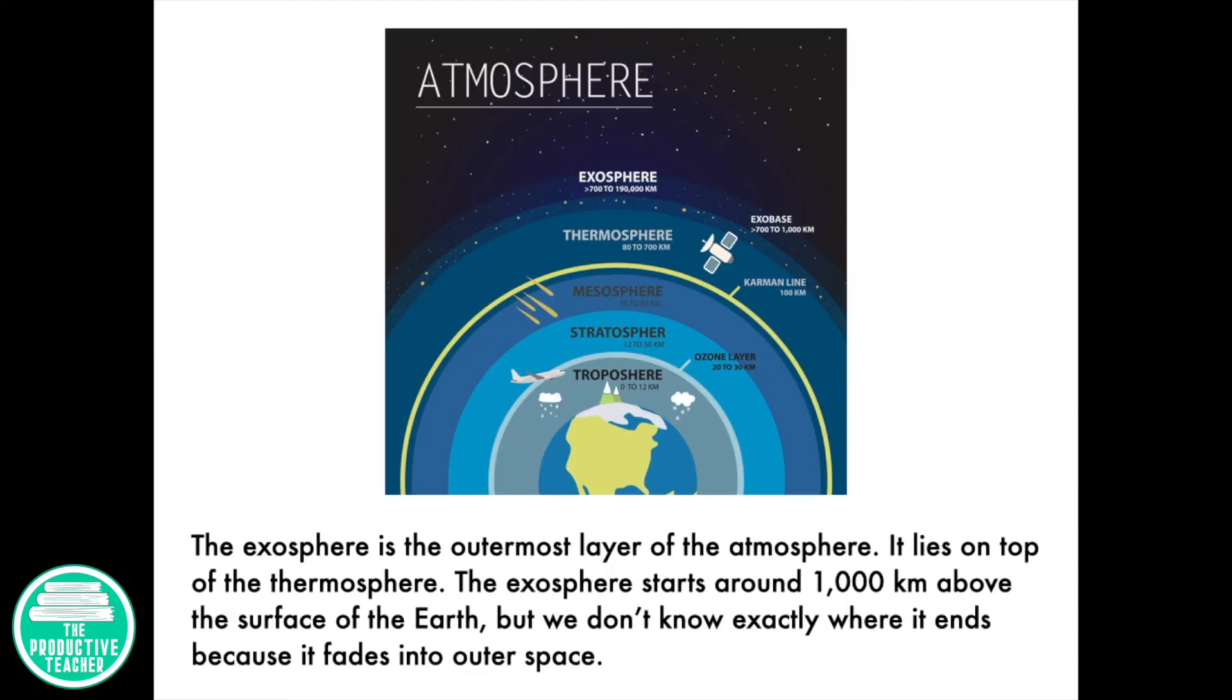The exosphere is the outermost layer of the atmosphere. It lies on top of the thermosphere. The exosphere starts around 1,000 kilometers above the surface of the Earth, but we don't know exactly where it ends because it fades into outer space.